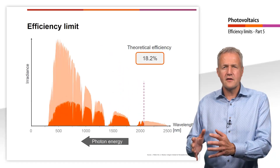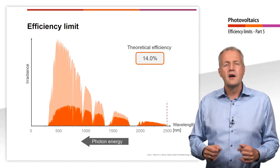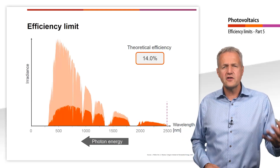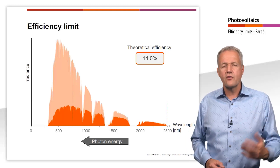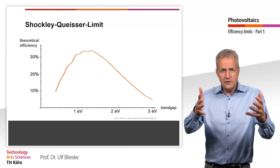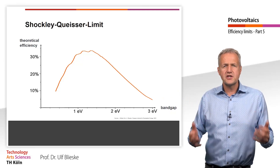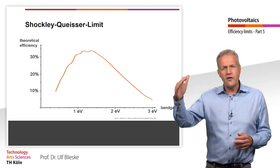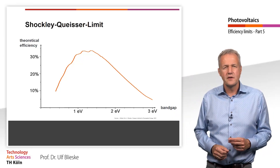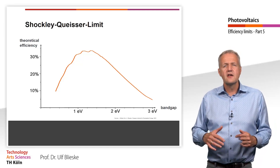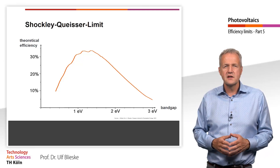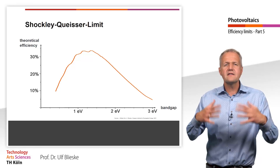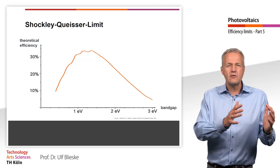Somewhere between these two extreme cases of a very small and a very large band gap, an optimum can be found. The relationship between the maximum possible efficiency and the band gap was first described by Shockley and Queisser and is known as the Shockley-Queisser limit. Here you can see the theoretical maximum efficiency that can be achieved depending on the band gap of a solar cell. The small waves in the curve are caused by the cores of the solar spectrum. If we were to calculate the theoretical efficiency for a different spectrum, the shape of the curve would change. The curve shown here refers to the AM1.5 spectrum. You can see that the highest efficiency can be achieved at band gaps between 1.1 and 1.4 eV.